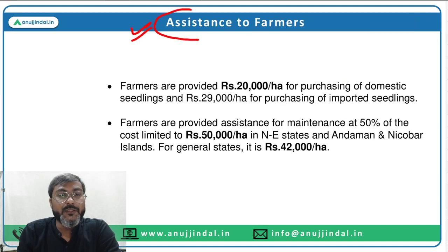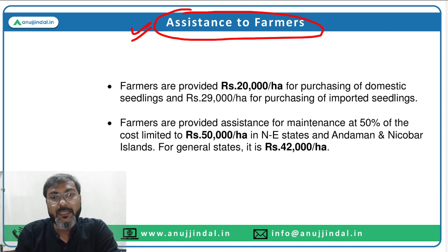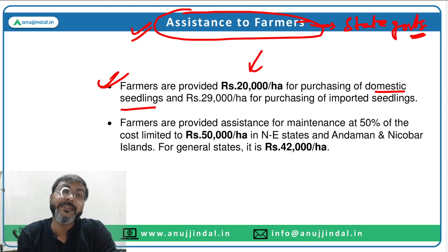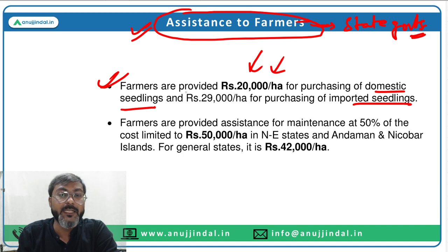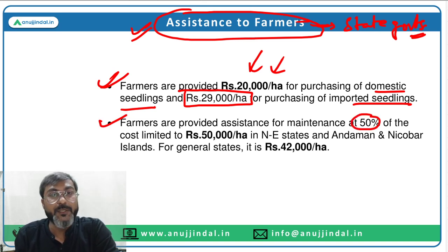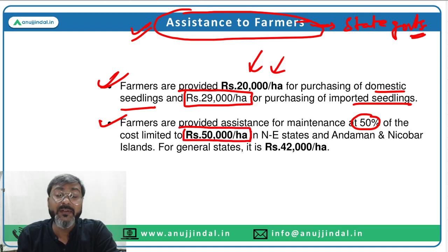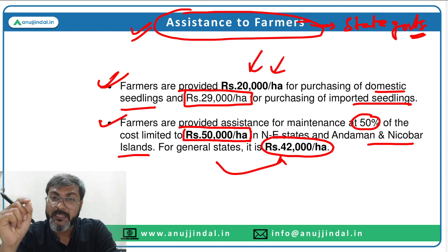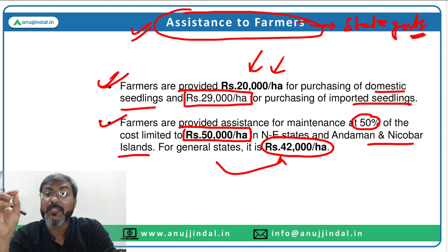There are certain assistances provided to farmers — through the state governments. Number one: farmers are provided Rs. 20,000 per hectare for purchasing domestic seedlings. If the farmer wants to purchase imported seedlings, then Rs. 29,000 per hectare is provided. Number two: farmers are also provided assistance for maintenance at 50% of the total cost, which is limited to Rs. 50,000 per hectare for Northeastern states and Andaman and Nicobar Islands, while for other states and UTs it is Rs. 42,000 per hectare.